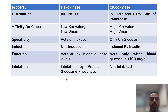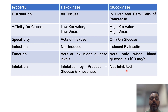Hexokinase is inhibited by its end product, glucose-6-phosphate, while glucokinase is not inhibited by glucose-6-phosphate. These are the major differences between hexokinase and glucokinase. Thank you for watching.